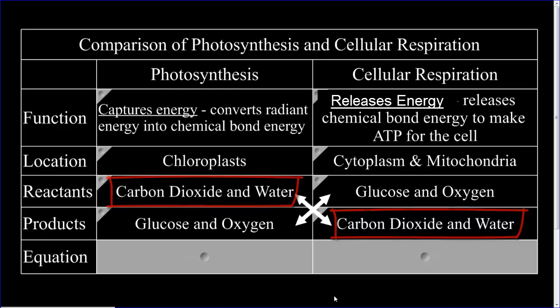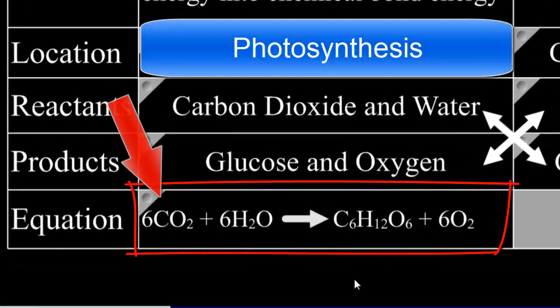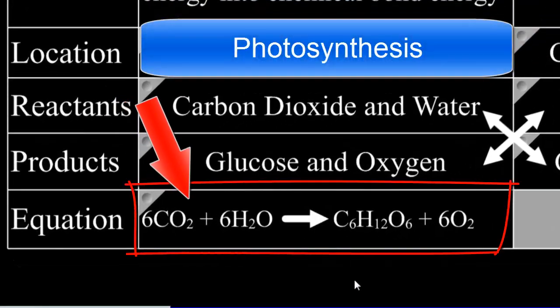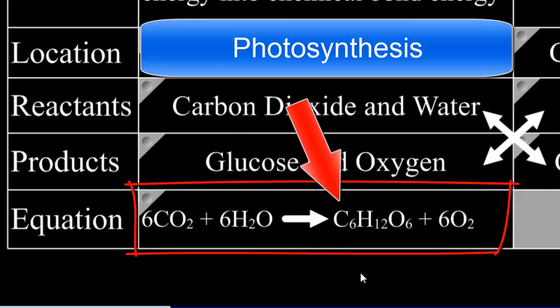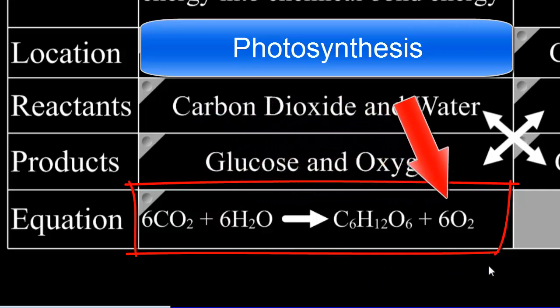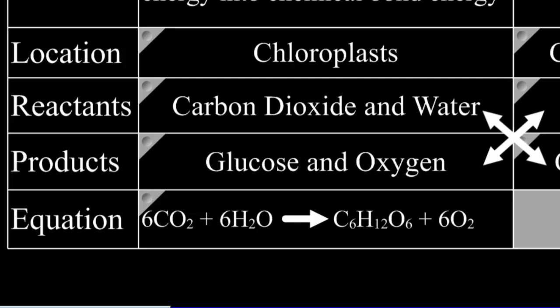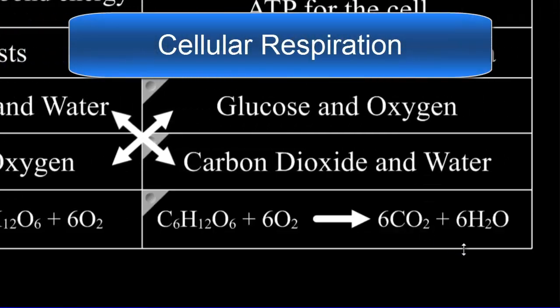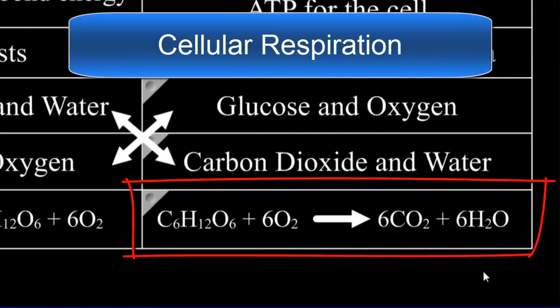The summary equation for photosynthesis is 6 carbon dioxide plus 6 water makes 1 glucose plus 6 oxygen, while cellular respiration is the opposite reaction.